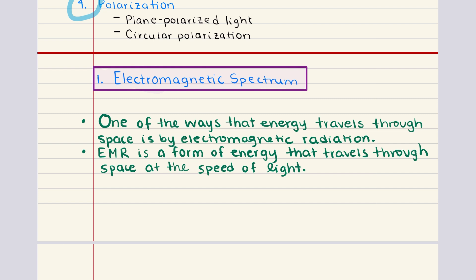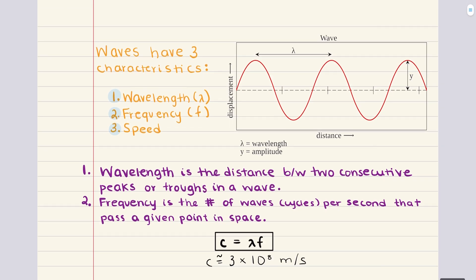To fully understand electromagnetic radiation, it's important to recognize its three defining characteristics: wavelength, frequency, and speed. These are all related through the equation: the speed of electromagnetic radiation in a vacuum equals wavelength multiplied by frequency.